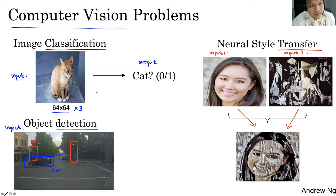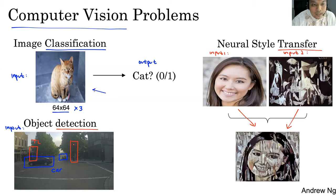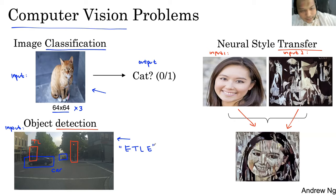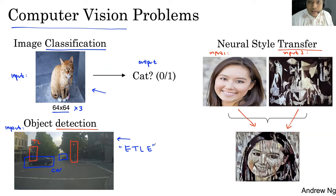Kalau dalam dunia nyata, misalkan ini untuk classification, misalkan untuk buka security di handphone atau di komputer, atau akses pakai wajah, atau pakai kornea mata. Ada juga sistem tilang elektronik yang baru-baru ini di-launching. Belum ada sebulan yang lalu, jadi sudah ada sistem tilang elektronik. Sudah berlaku nasional, hampir di semua polda.